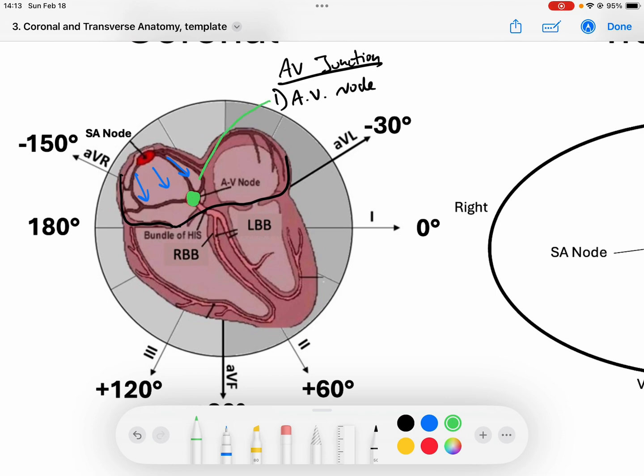We know that the AV node is what delays the signal by 120 to 200 milliseconds. If the AV node itself is diseased, the PR interval will change - it'll get longer, potentially. That's what we see a lot in our second degree type 1 and first degree AV blocks.